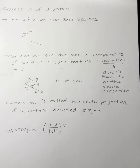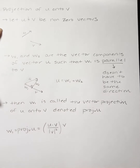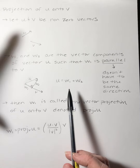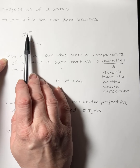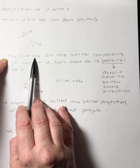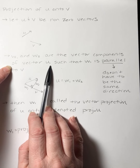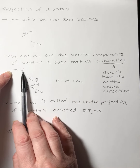Next we have our projection vectors. We start with two vectors, u and v — non-zero vectors. We come up with the component vectors of u: w sub 1 and w sub 2, which are the vector components of vector u, such that w sub 1 is parallel to v.